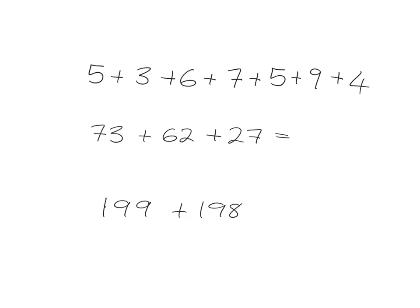If I know my bonds to 10 really well, one of the things I can do is actually just match up tens. So I've got a 5 and a 5, that's going to give me one 10. Then I've got a 3 and a 7, that's going to give me another 10. And then I've got a 6 and a 4, that's going to give me another 10. So quickly and easily I can see the answer to this is 39, a nice quick way of getting to the answer.